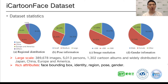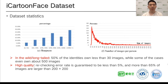In this figure, we present region distributions of identities, pose annotations, and image resolution distribution. To our knowledge, this is currently the largest manually annotated image dataset for cartoon face recognition. The dataset is created naturally with a long-tail distribution, and the label-checking error rate is guaranteed to be less than 5%.